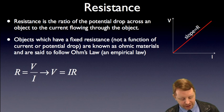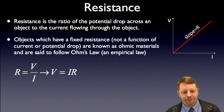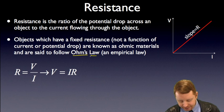So, let's start by talking about resistance. Resistance is the ratio of the potential drop across an object to the current flowing through the object. Objects that have a fixed resistance, when it's not a function of current or potential drop, are known as ohmic materials, and they're said to follow Ohm's law.